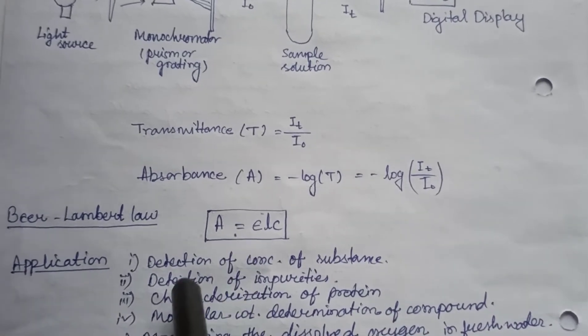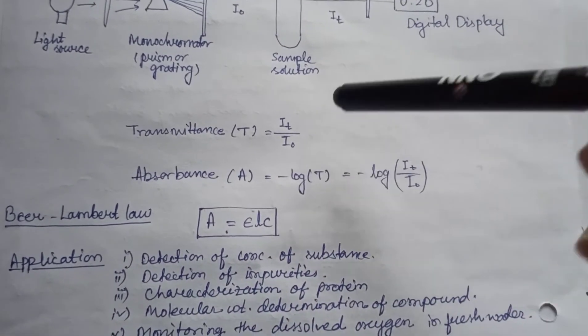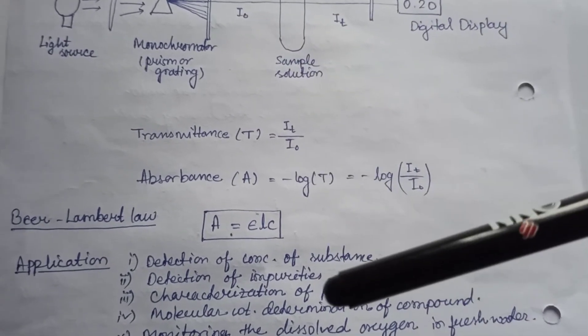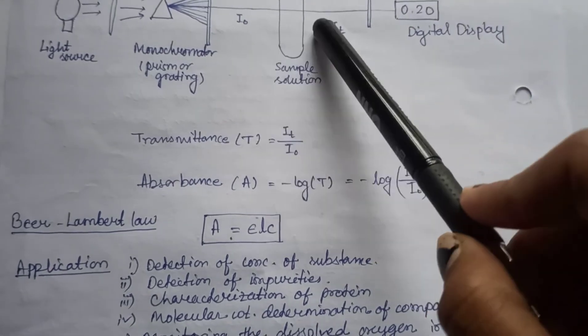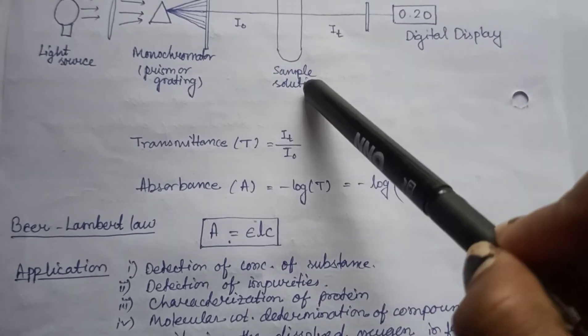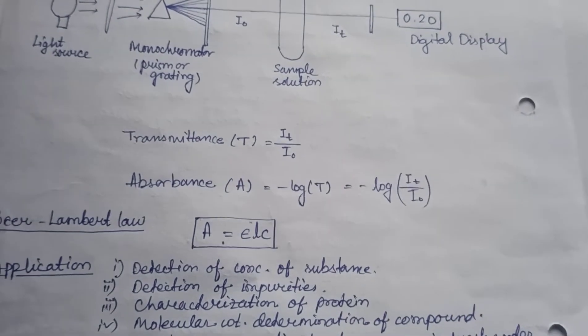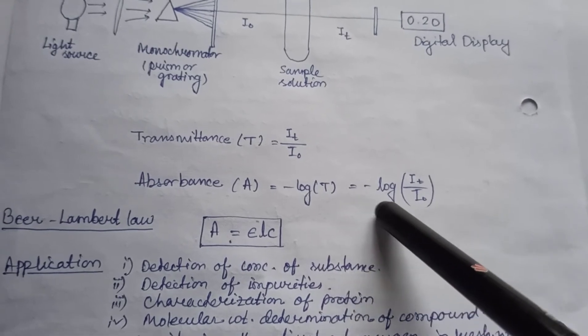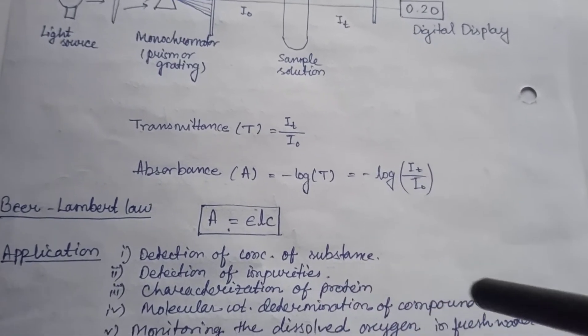The Beer-Lambert law states that the absorbance of light by a sample solution is directly proportional to the thickness of the path length or the concentration of the solution. We can say the absorbance is equal to minus log T, that is minus log It by I0.